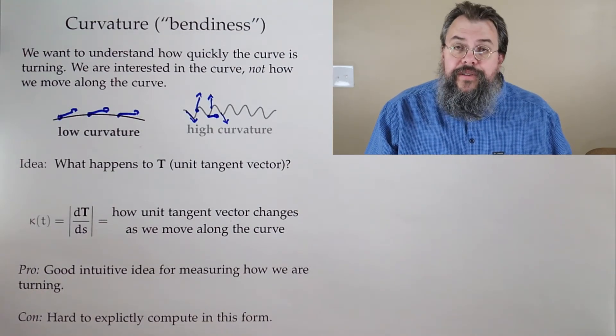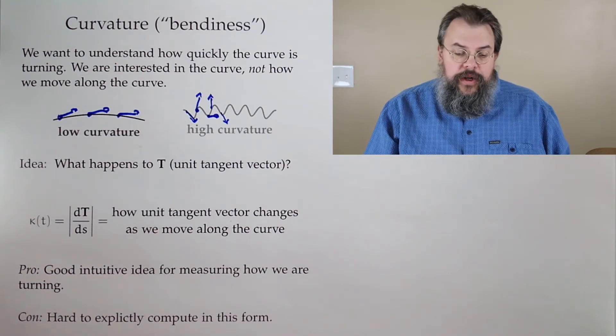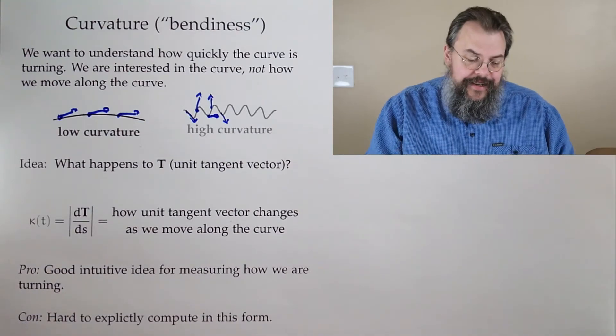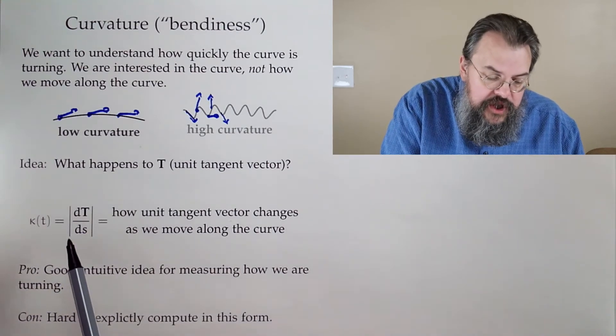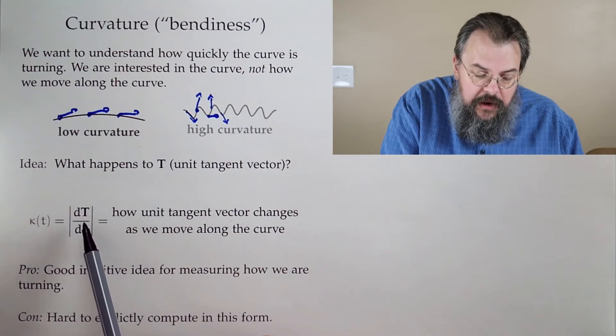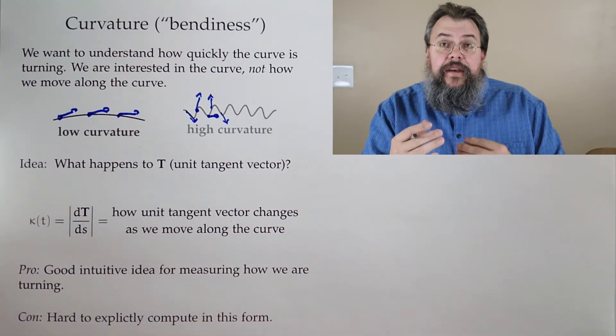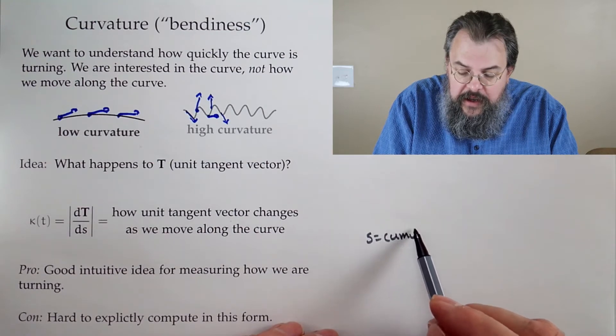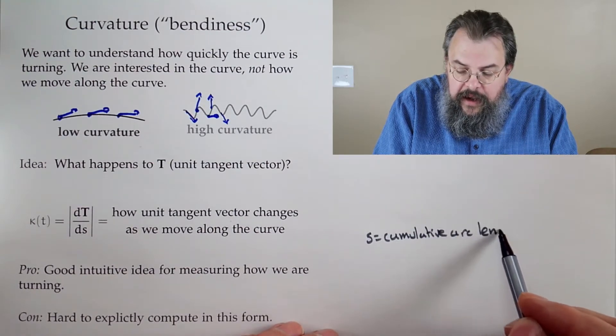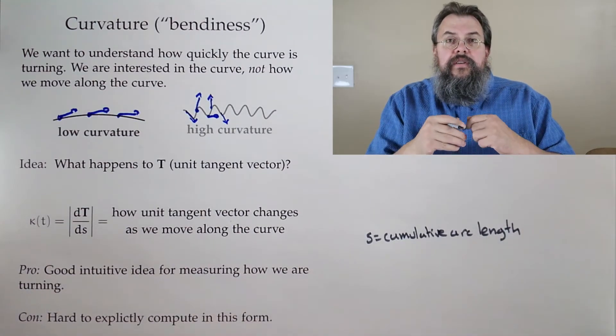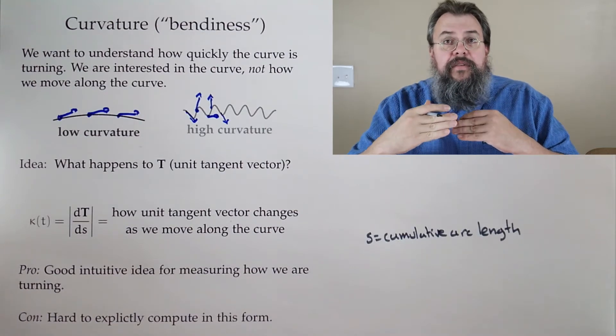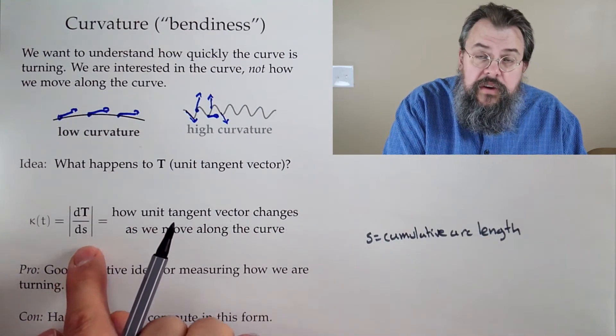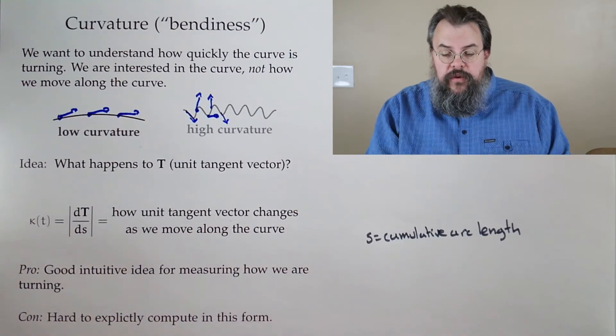We're going to come up with a measurement called curvature, denoted by kappa. It's the change in our unit tangent vector T over the change in S. S is our cumulative arc length. In other words, it's how far we've traveled. We're phrasing it all in terms of distance. How does our unit tangent vector move as we move along our curve?